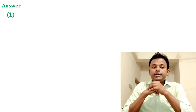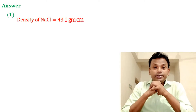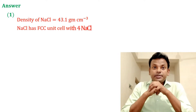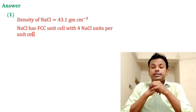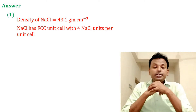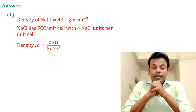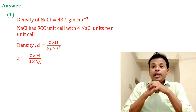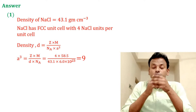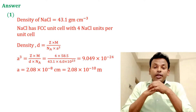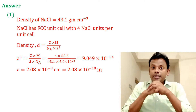Answer equals 1. Density of NaCl equals 43.1 g/cc. NaCl has an FCC unit cell with 4 NaCl units per unit cell. Using the density formula D = Z × M / (Nₐ × a³), and putting in all values, a = 2.8 × 10⁻¹⁰ meter.